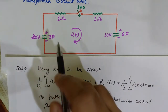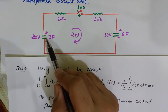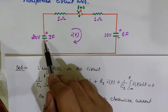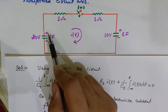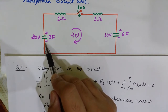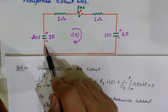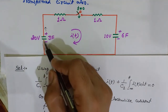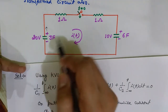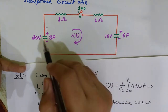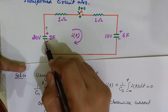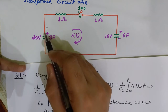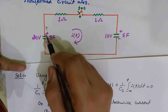Since current is assumed flowing clockwise — upward at this branch — the potential difference is final minus initial. Since current flows from higher to lower potential, for capacitor C1 the starting node is at higher potential and the ending node is at lower potential. So the potential difference (final minus initial) is negative, giving a minus sign before the capacitor voltage term.